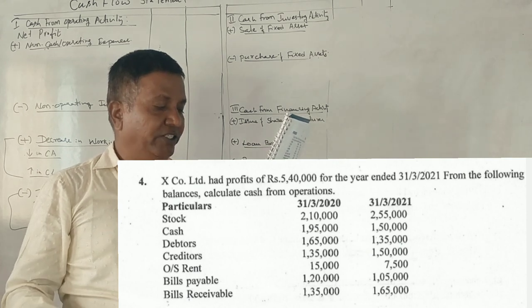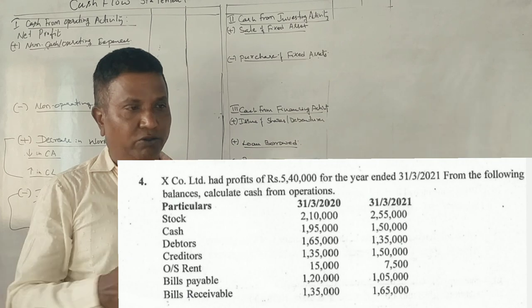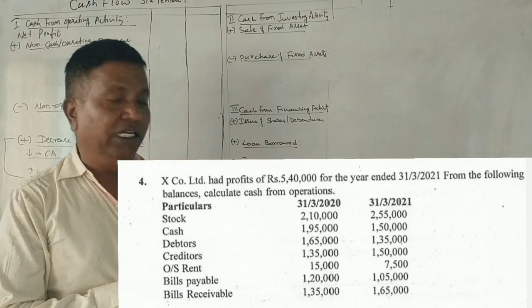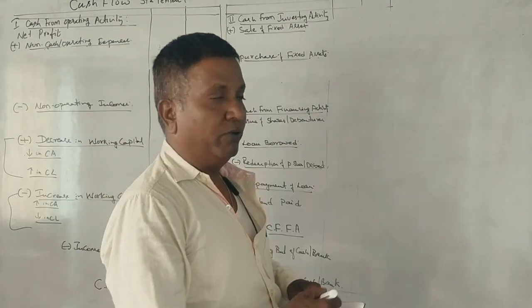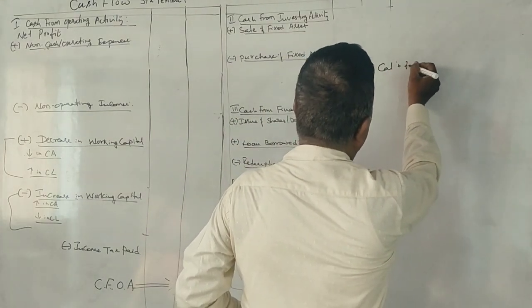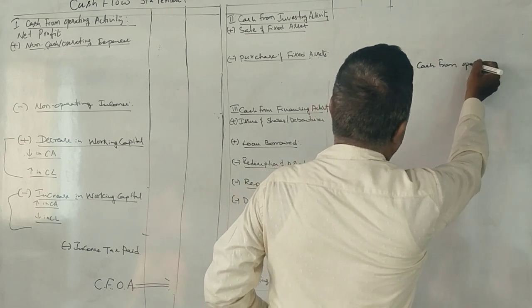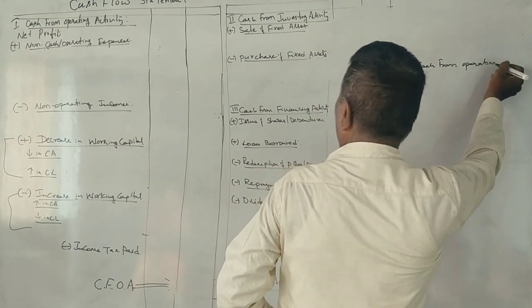The items given are: stock, cash, debtors, creditors, outstanding rent, bills payable, and bills receivable. This is the calculation of cash from operations.